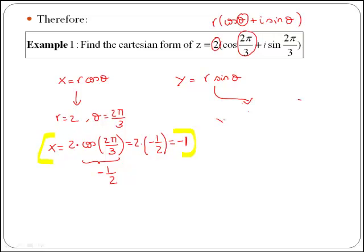If we do the same for y, then we have y is equal to 2 times sin of 2π over 3. And then again, you can use the log tables with π over 3, and then add the appropriate sign, or you can use the calculator. In any of the cases, you will get that sin of 2π over 3 is simply the square root of 3 over 2.